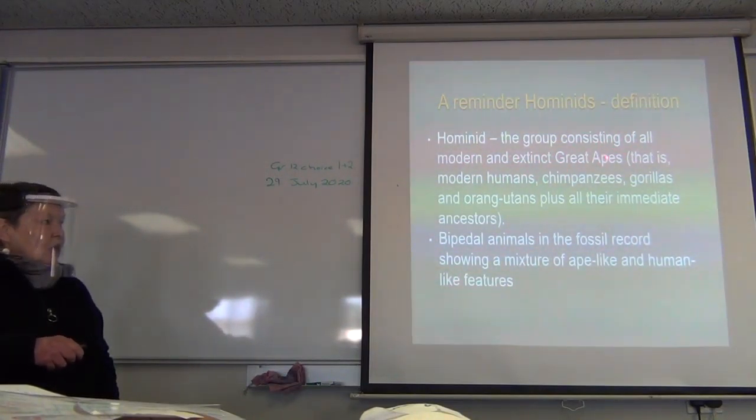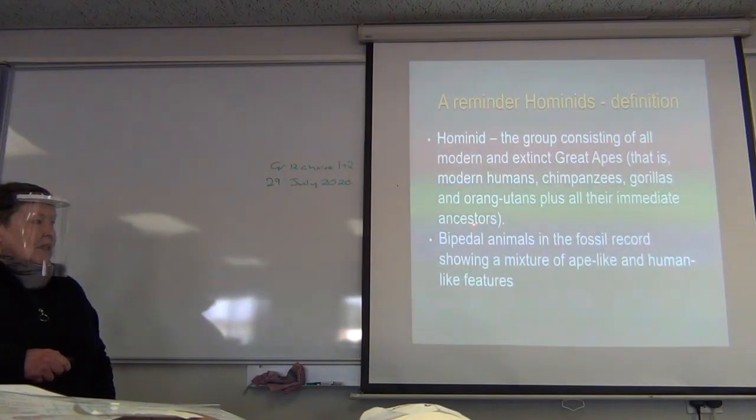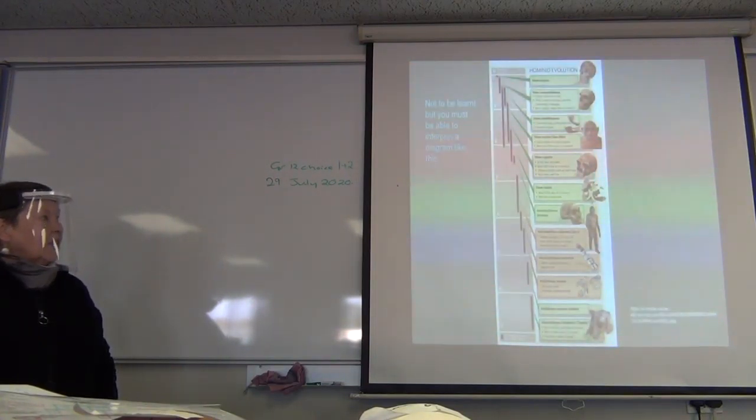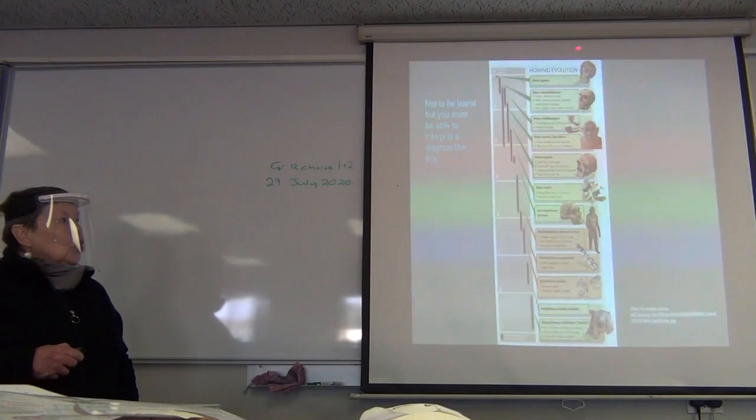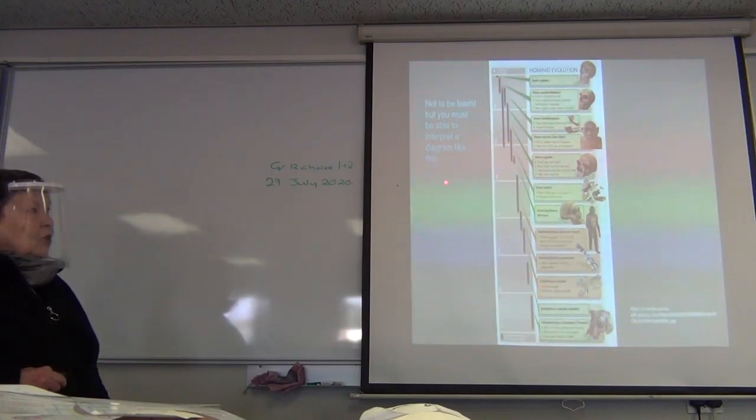A reminder about the definition of hominids. So hominid, remember the modern definition? The group consisting of all modern and extinct great apes. So that's modern humans. And then the modern apes, as opposed to the extinct great apes, chimps, gorillas, orangutans. Plus all their immediate ancestors.